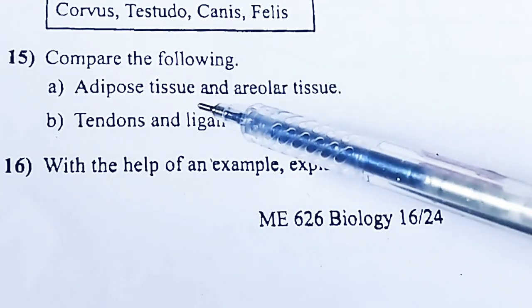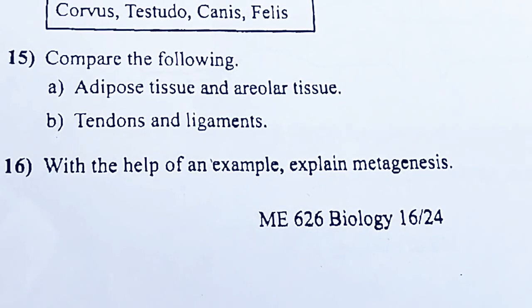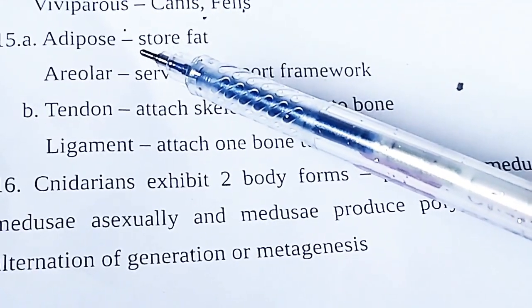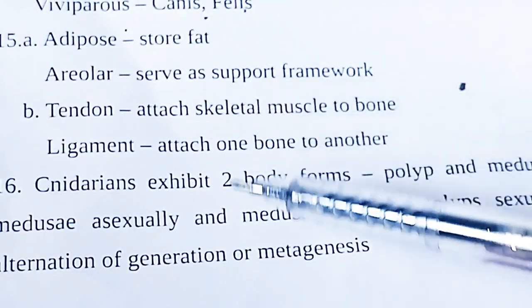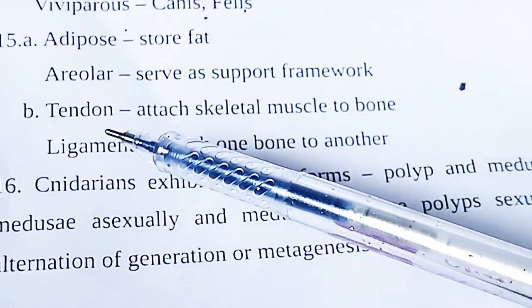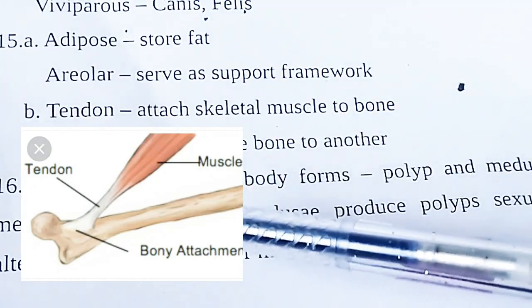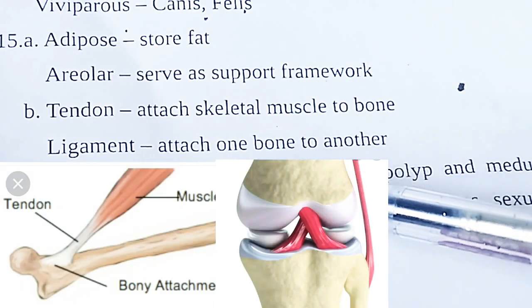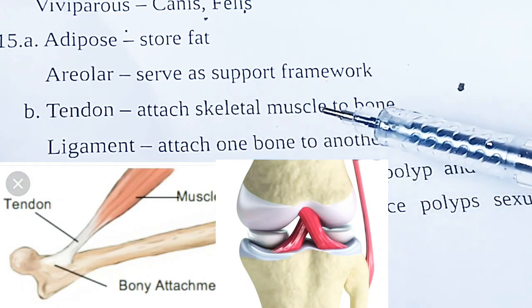Compare the following: Adipose tissue and Areolar tissue; Tendons and Ligaments. Adipose tissue stores fat, while areolar tissue serves as a support framework. Tendons attach skeletal muscles to bone. Ligaments attach one bone to another.